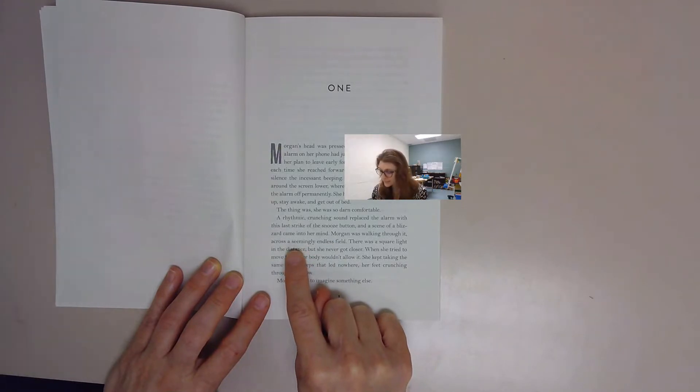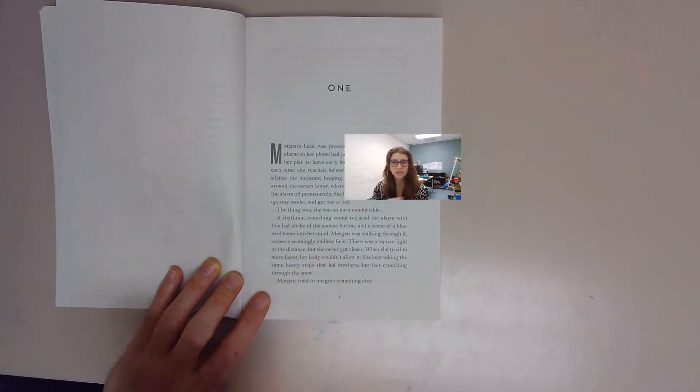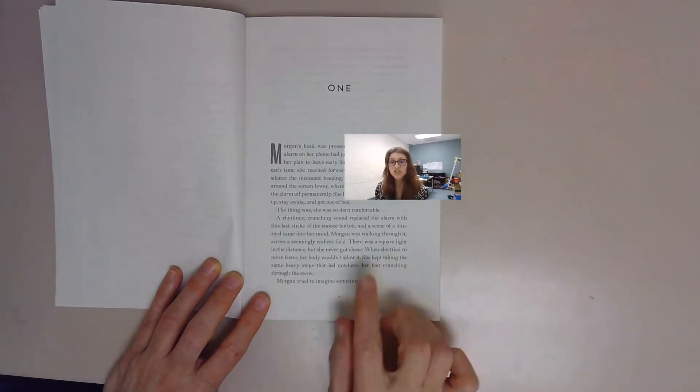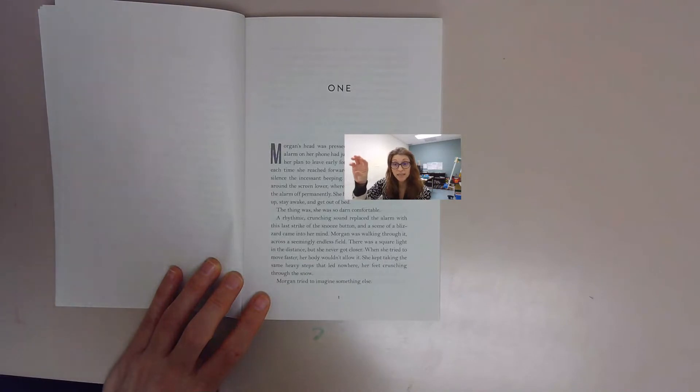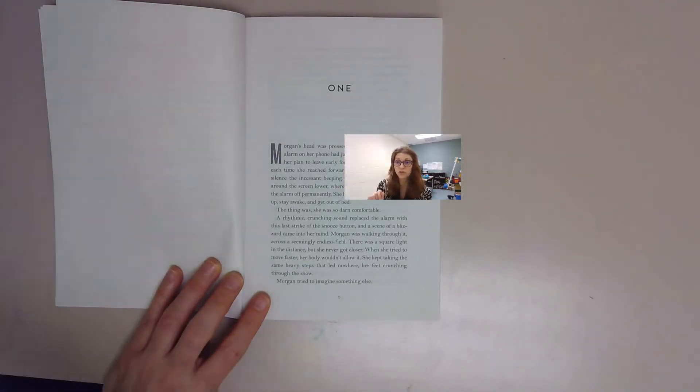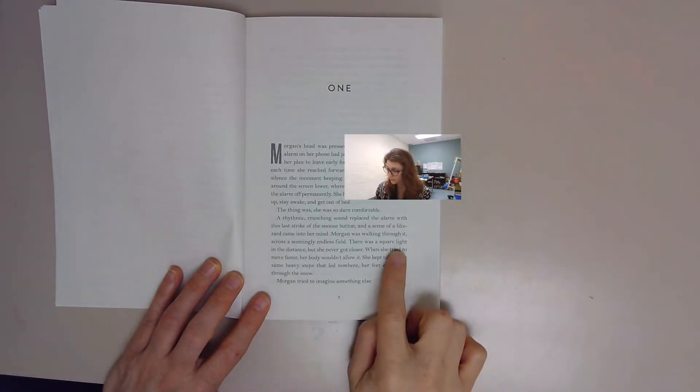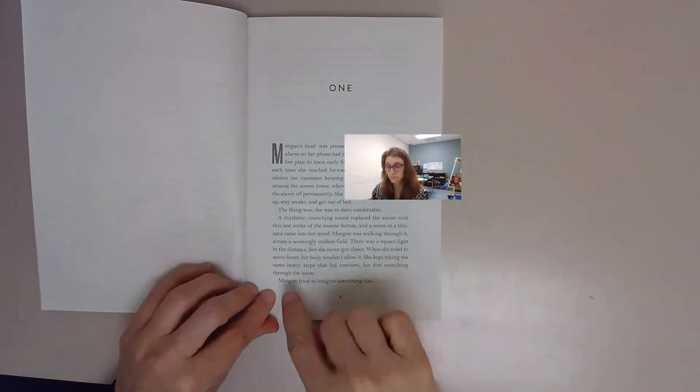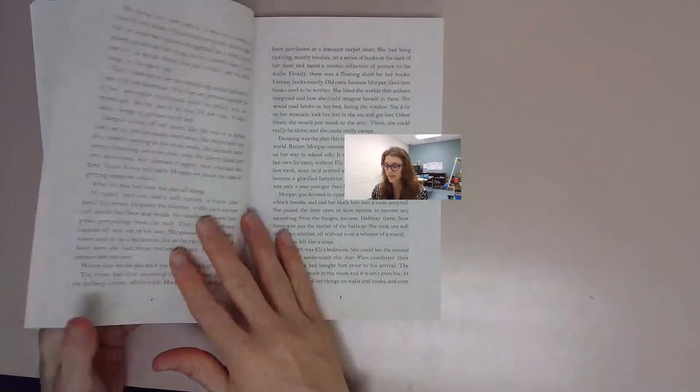This sounds like Morgan has slipped back into maybe a dream, where there's a blizzard going on. She's looking through a seemingly endless field, like it looks like it goes on forever in the middle of a blizzard. She can see a light, a square light in the distance. However, it seems no matter what she does, she's never getting anywhere closer to this light.